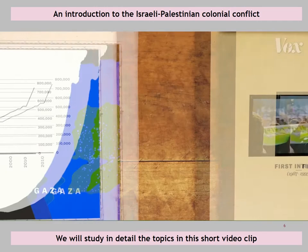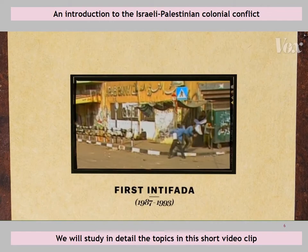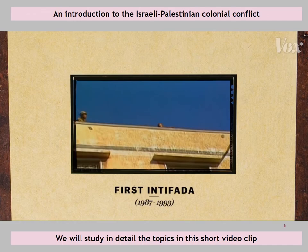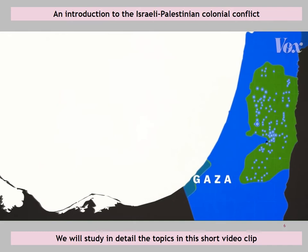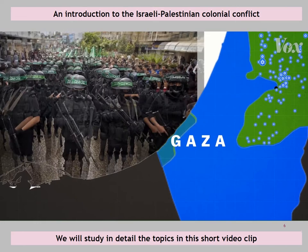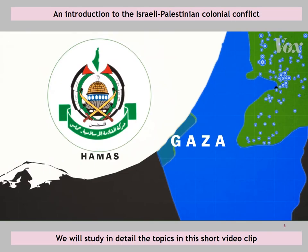By the late 1980s, Palestinian frustration exploded into the intifada, which is the Arabic word for uprising. It began with mostly protests and boycotts, but soon became violent. Israel responded with heavy force. A couple hundred Israelis and over a thousand Palestinians died in the first intifada. Around the same time, a group of Palestinians in Gaza who considered the PLO too secular and too compromise-minded created Hamas, a violent extremist group dedicated to Israel's destruction.